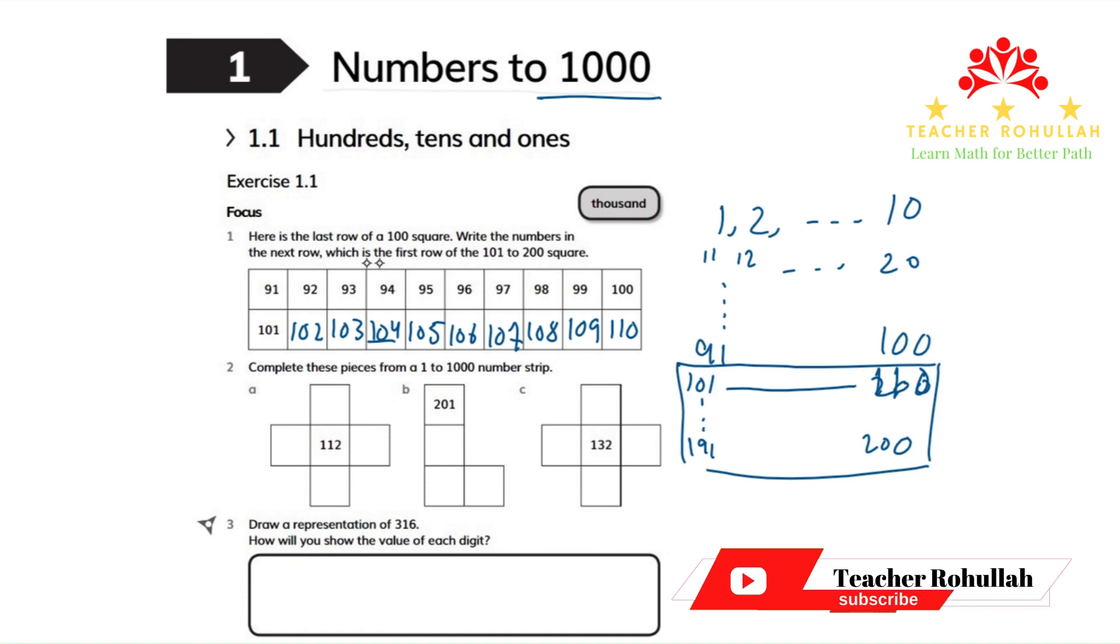In the second question it says complete these pieces from a one to thousand number strip. In one to thousand we start with one and the row ends with one hundred. Then one hundred one, the row ends with two hundred. Two hundred one, the row ends with three hundred and so on up to nine hundred ninety one and one thousand. So all the numbers come in order over here.